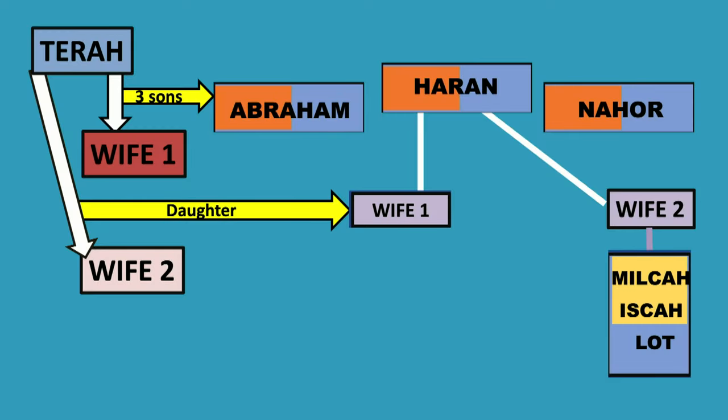This brings us to our Torah portion. Before we go there, let me show you something to help everyone map things in their brain. Terah had a wife who had three kids: Abraham, Haran, and Nahor. He had another wife, and they had a daughter who became one of Haran's wives. Haran had another wife who had Milcah, Iscah, and Lot. At this time Abraham doesn't have any kids, Abraham's not married, and Nahor's not married.